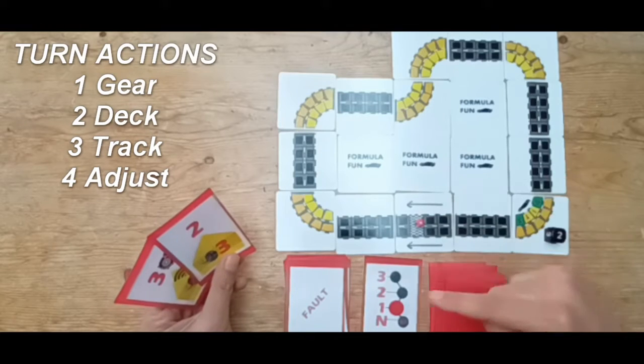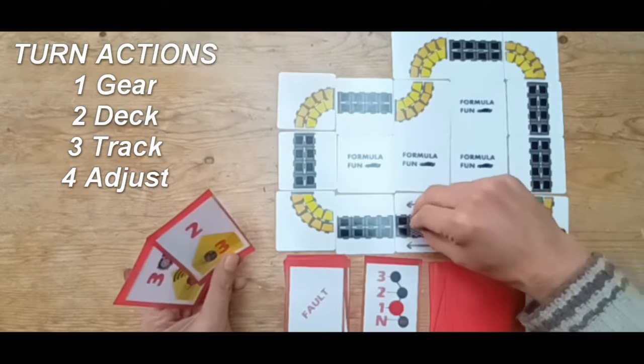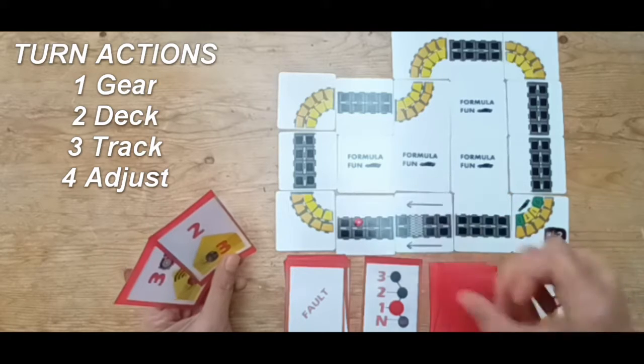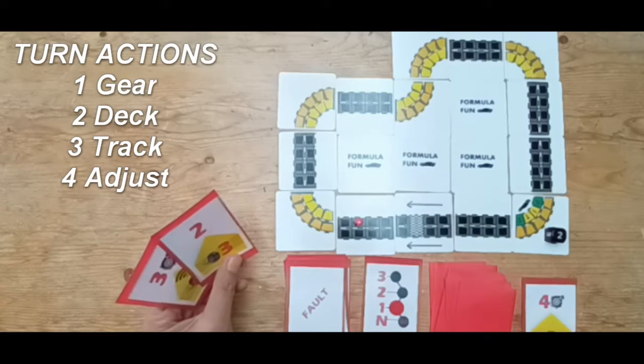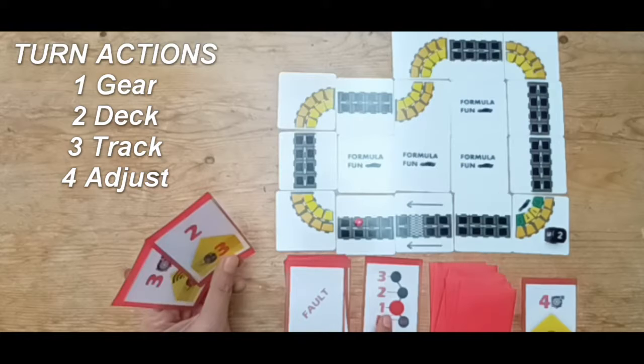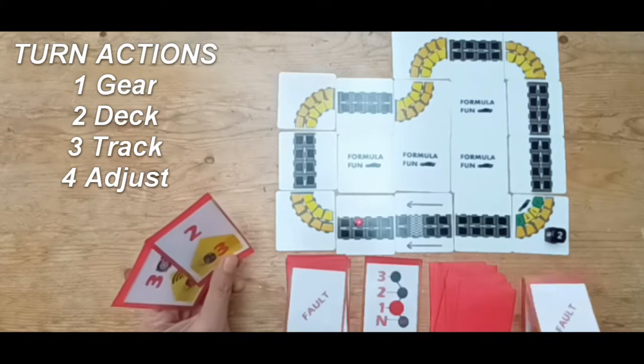Then for my deck I translate that movement onto the track: one, two, three, four. And I get one adjustment in the fact that because I maxed out my gear limit, then I get a fault card into my discard pile.